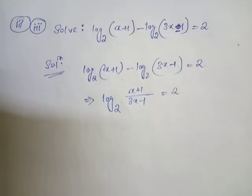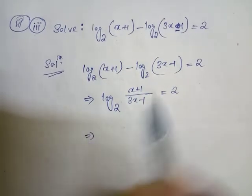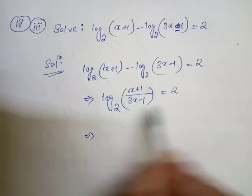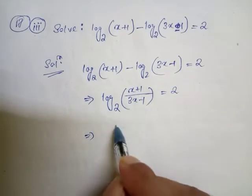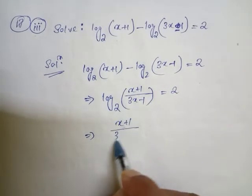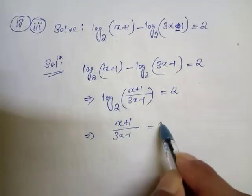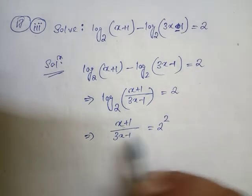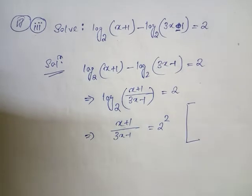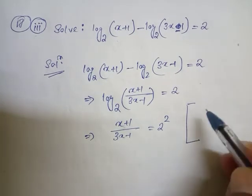After this, we can directly write (x+1)/(3x-1) equals 2 squared. How to get this line? The formula is a to the power n equals m, which implies n equals log base a of m.